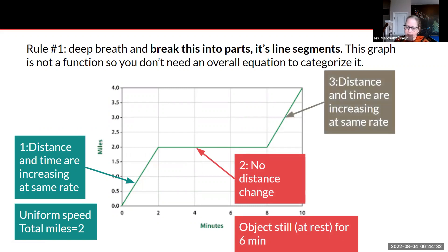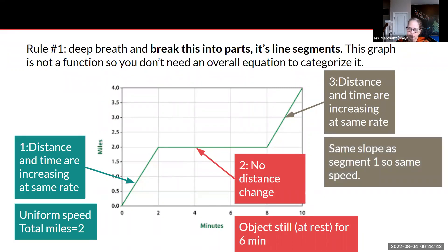And that last line actually looks at the same slope as the first one, so it's the same thing: uniform speed for a total of two miles.